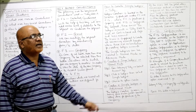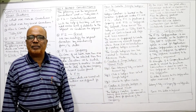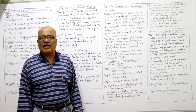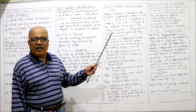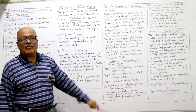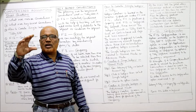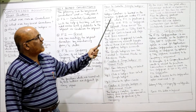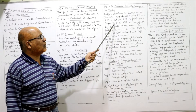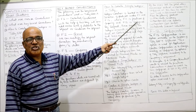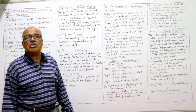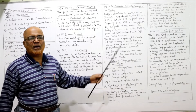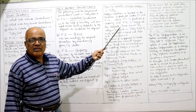Creating a single ledger account in Tally ERP is a very frequently asked theory question. Ledger creation is based on the selection of features under F11 and F12 — F11 is the features of the company and F12 is the configuration of the company. How to create the ledger depends on the settings made under F11 and F12.